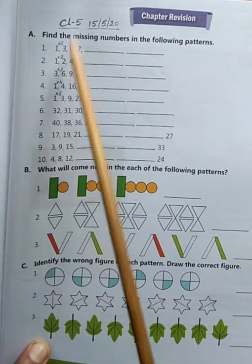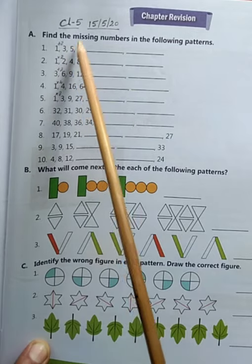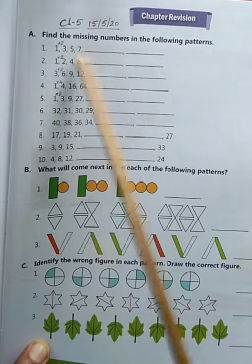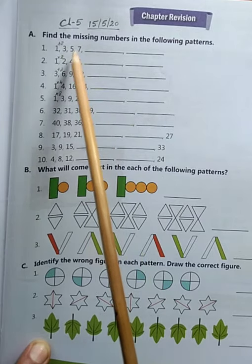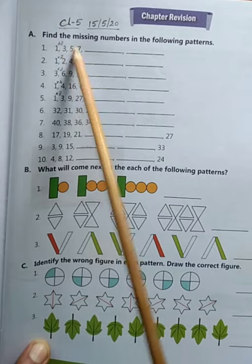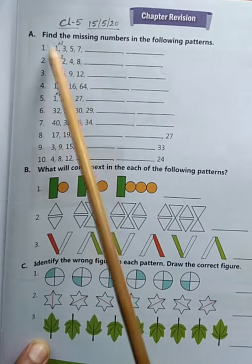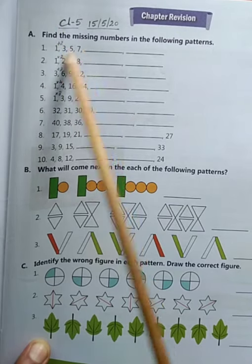So 1 plus 2 will be 3, then 3 plus 2 will be 5, 5 plus 2 will be 7. So in order to get the subsequent numbers in the series, you have to add 2 to the previous number. So adding 2, that is the rule here. First thing is always important to find the rule.